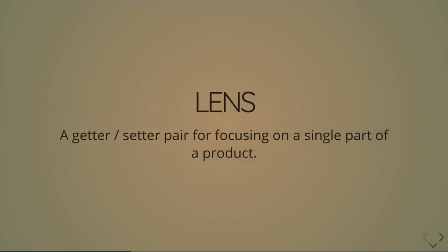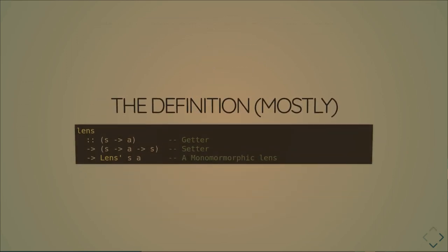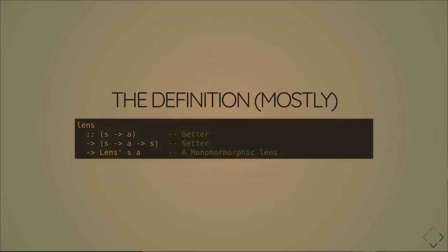Let's talk about lens. The way to describe a lens is a getter-setter pair for focusing on a single part of a product. If it's got a field, we can go in there, grab the value out, set it, and return a new thing. The definition kind of looks like this — it's a bit of a lie, a bit more complicated, but the general idea is: is there anybody here that doesn't know Haskell syntax and will be confused if I don't explain what's going on here?